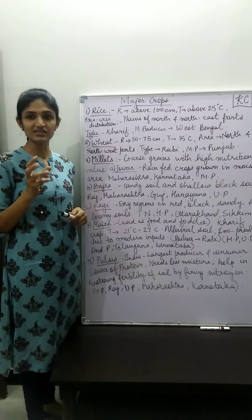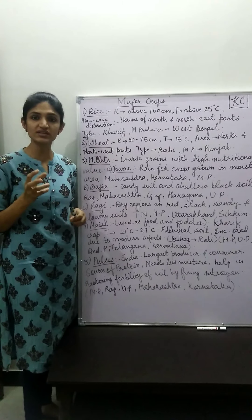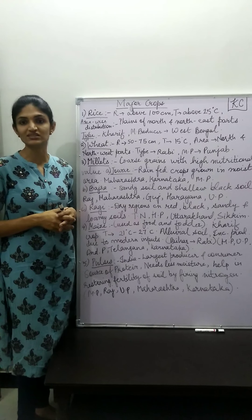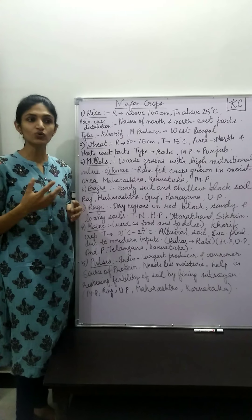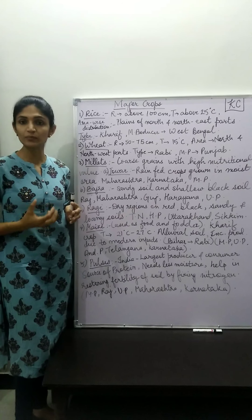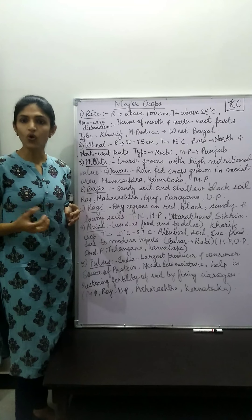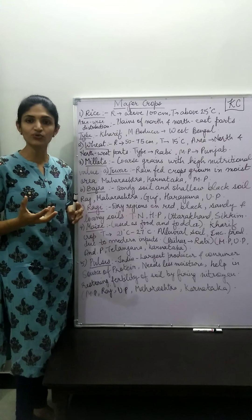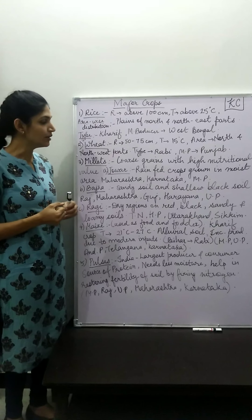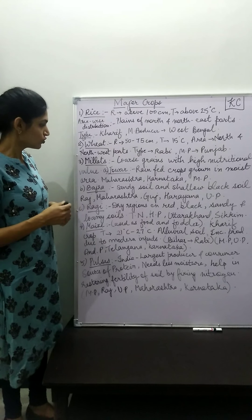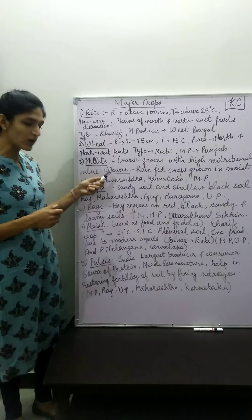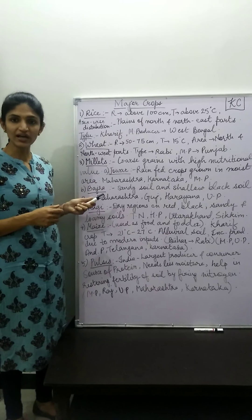Now talking about millets. Millets are coarse grains which have high nutritional value. There are particular nutrients such as iron, calcium, and roughage — many nutrients which are present in high content in millets. We will look at three types of millet crops: Jowar, Bajra, and Ragi.